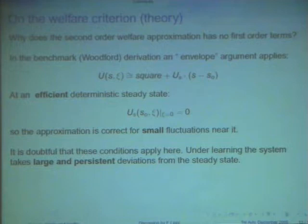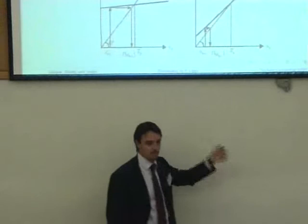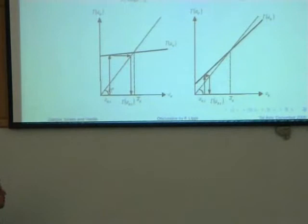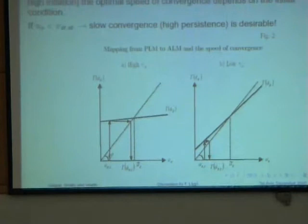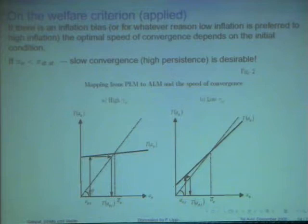But here, I doubt that these assumptions are correct, because we know that under learning, the system can take very large deviations and stay away for a long time. Just an example, using those pictures that I showed before. Suppose that the policymaker, suppose that there is an inflation bias, or that for whatever reason the policymaker prefers low inflation to high inflation. Then, if you use a policy that converges very slowly, and you start from low inflation, it can be good, because you will have low inflation for a long time. Whereas, the opposite holds if the initial conditions were you were starting from a hyperinflation, then you want to go for this policy, because it kills inflation very fast. Taking account of first-order terms has implication for the speed of convergence, which depend on the initial conditions of the system. You don't see this in the quadratic approximation, because there's no first-order terms. But I think that this may be important in a setup with learning.